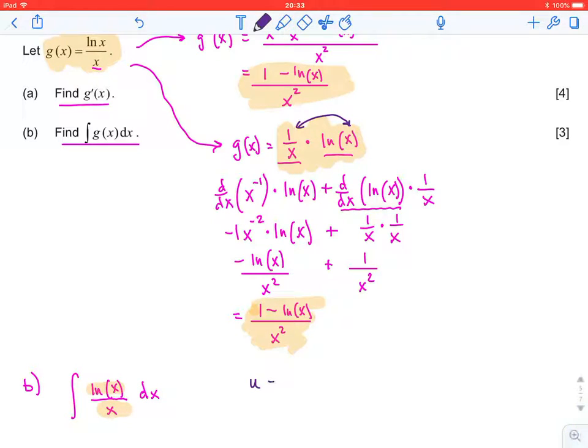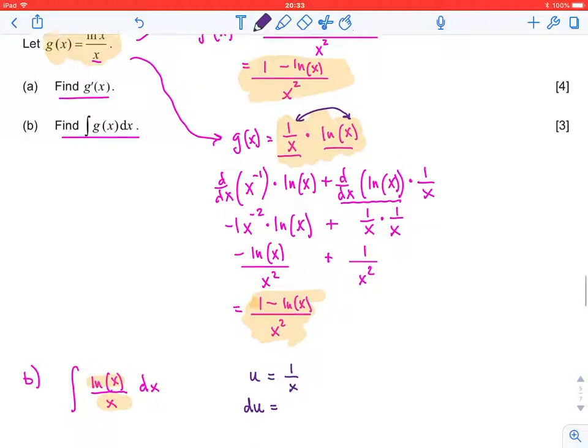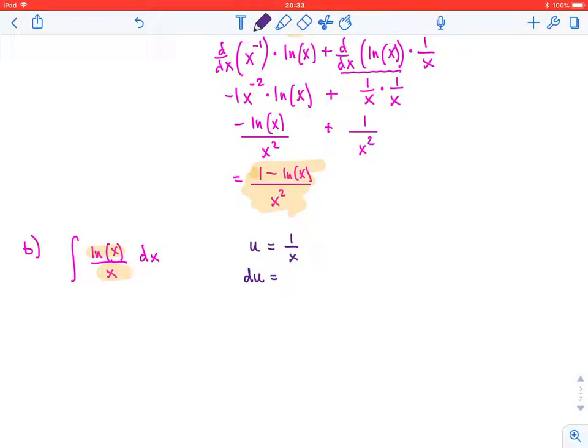Let's say we did u = 1/x. Using our procedure for u-substitution, that means du would be the derivative of x^(-1), which is -x^(-2). Now notice that when we do this, we don't get ln(x).